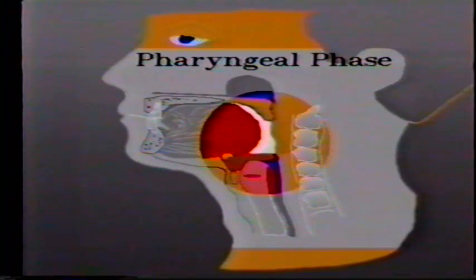The second phase of swallowing is known as the pharyngeal phase. In this phase, the larynx moves up and forward, causing the epiglottis to lower and protect the airway or trachea. Additional protection occurs through vocal cord closure. This prevents food, liquid, or saliva from entering the trachea. The pharyngeal contractions then push the bolus from the pharynx into the esophagus.